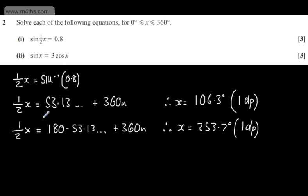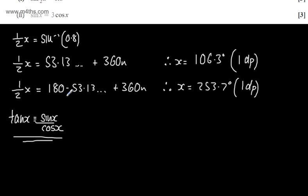Let's look at the second one. We have sin x = 3 cos x, and the question carries 3 marks. I know the identity tan x = sin x / cos x, so I'm going to divide both sides of the equation by cos x.